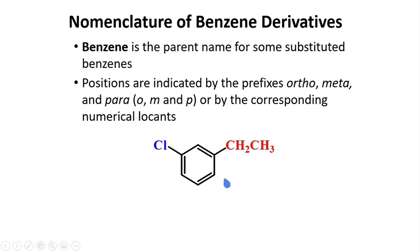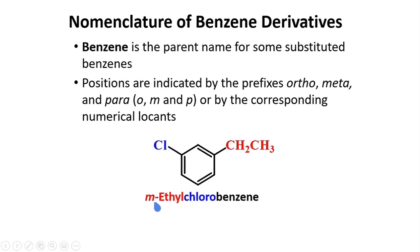In this compound, the chlorine and ethyl substituents are positioned at C1 and C3. This type of relationship is called meta, or m. To name it properly, we take the substituent with alphabetical priority, which is chloro. So this is a chlorobenzene, and the ethyl group is taken as the substituent of chlorobenzene at the meta position. The name is meta-ethylchlorobenzene, or m-ethylchlorobenzene.